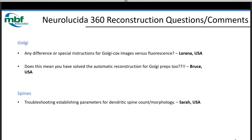We're going to be working more towards specifics — two things we want to address today are Golgi images and images with dendritic spines. Let's jump right in. I really encourage everybody to start submitting your questions. TJ at the office is going to be able to demonstrate the use of the software live. Why don't we go over some basic functionality of Neurolucida 360?